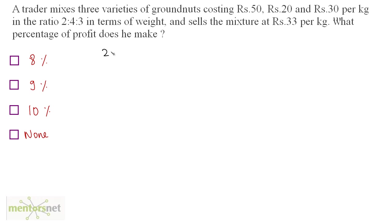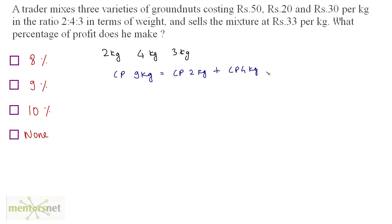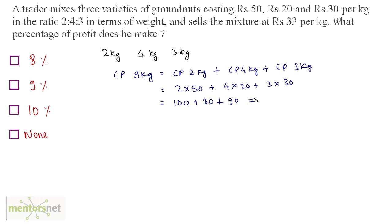We have three varieties of ground nuts in the ratio 2:4:3, so we have 2 kg of one variety, 4 kg of another, and 3 kg of the third — 9 kg total. The cost price of 9 kg equals 2 kg at Rs. 50, plus 4 kg at Rs. 20, plus 3 kg at Rs. 30. That's 100 plus 80 plus 90, equaling Rs. 270.